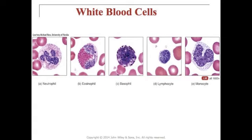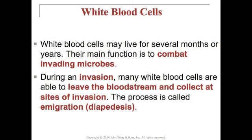Figure 19.7 on page 708 shows that the shapes of the nuclei and the staining properties of their cytoplasmic granules help to distinguish the different types of white blood cells from one another. White blood cells may live for several months or years, and their main function is to combat invading microbes. During an invasion of microbes, many white blood cells are able to leave the bloodstream and collect at the sites of the invasion — this process is called emigration.